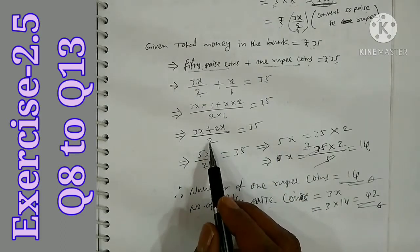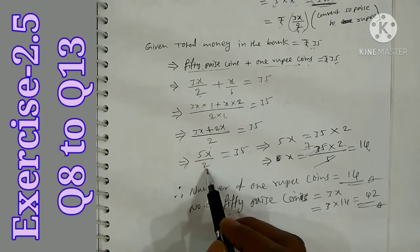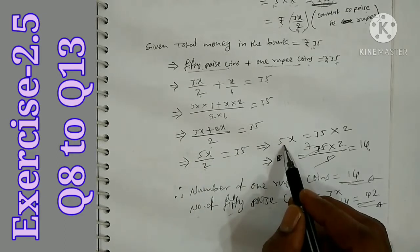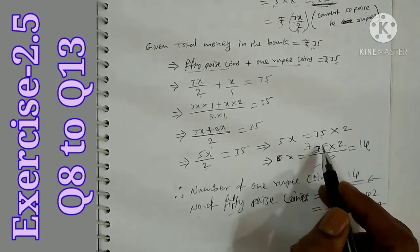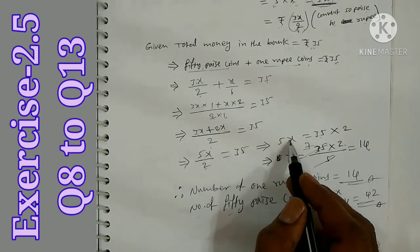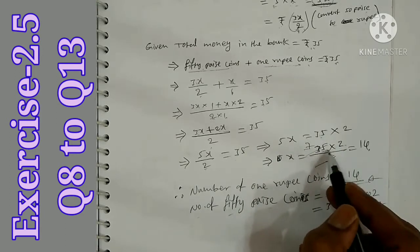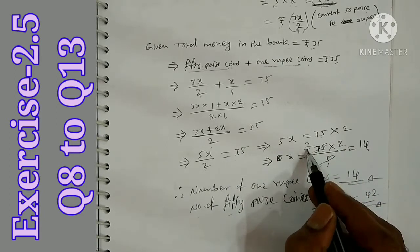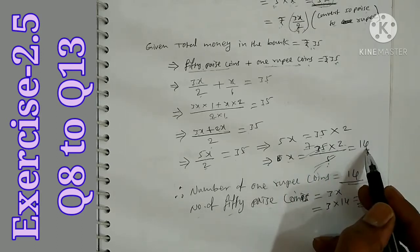So 5x equals 35 into 2. Since 5 is multiplying, we divide both sides by 5. So x equals 35 into 2 by 5, which is 70 by 5. 5 sevens are 35, so x equals 14.